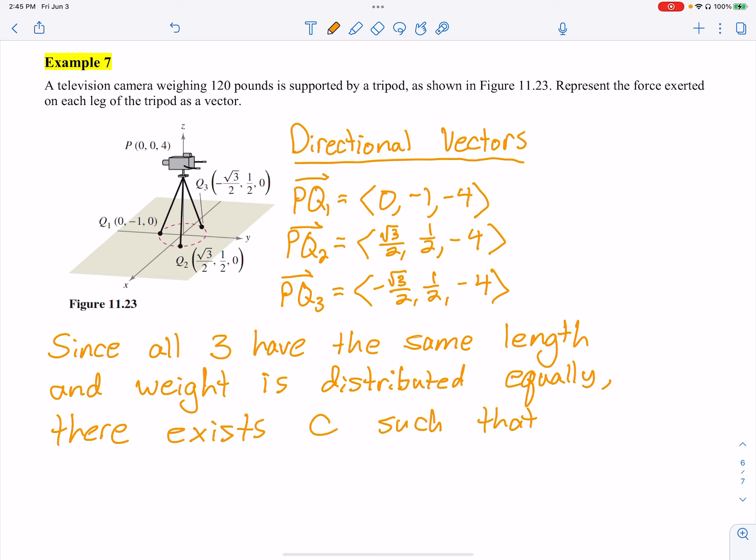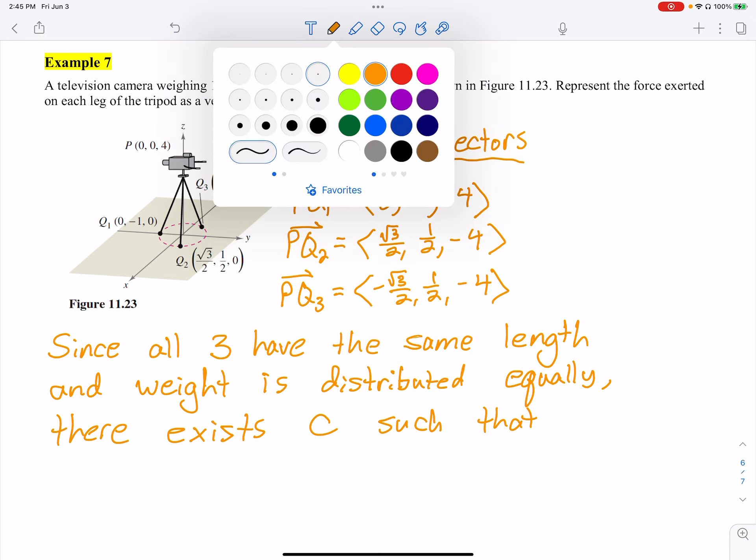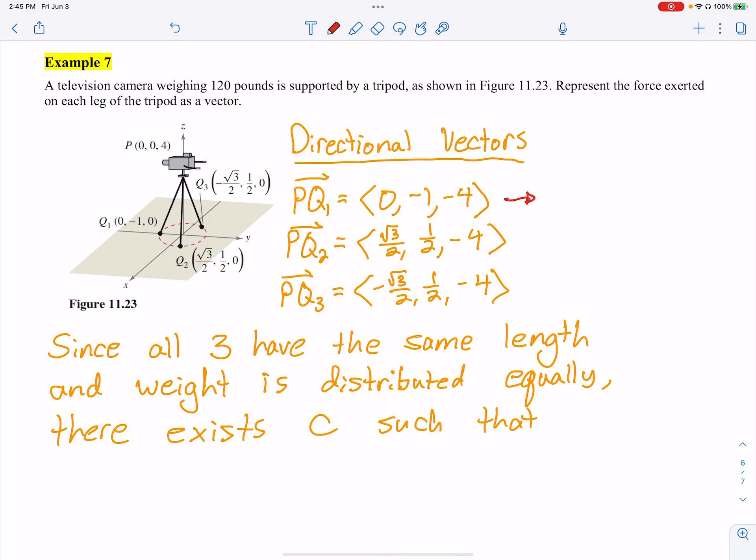Now, to get a force from this, force 1 is going to be some kind of magnitude times PQ1. That would describe the force, right? The C1 being how much force is going in that direction. F2 says there's a C2 that I can multiply in that direction, and that will give me my force. Same thing with F3.